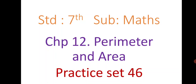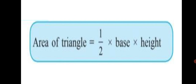Standard 7th, Subject Maths, Chapter 12: Perimeter and Area, Practice Set 46. Today we are going to learn a new formula: area of a triangle is equal to half into base into height. You are already familiar with the formula for area of a square and area of a rectangle. Now you will solve some problems based on area of a triangle. A triangle has a base and a height, and its formula is half into base into height. Write down this formula in a box before you begin with Practice Set 46.